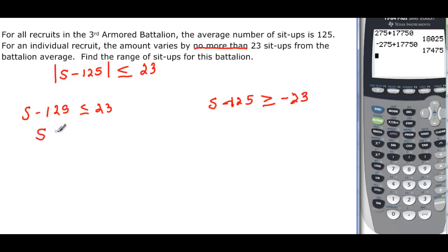So if I add 125 to 23, we're going to have S is less than or equal to 148. And if we add 125 to negative 23, we're going to have S is greater than 102.